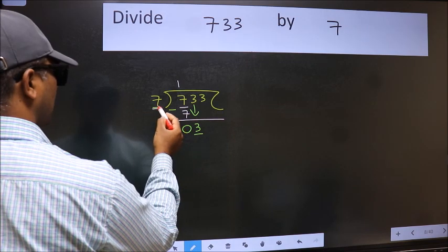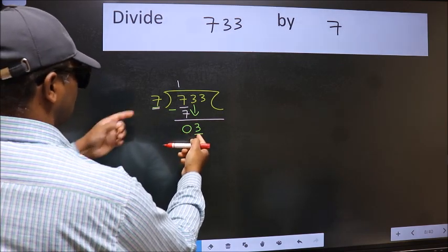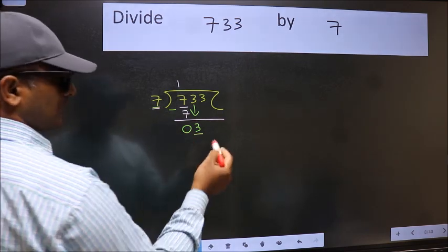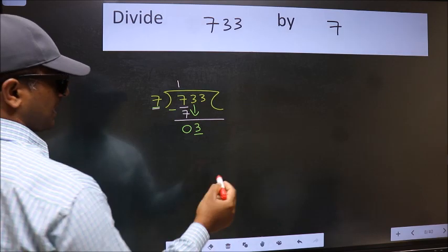Now here we have 3 and here 7. 3 is smaller than 7. So we should bring down the second number.